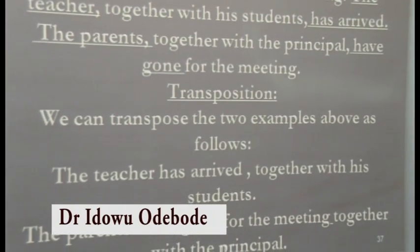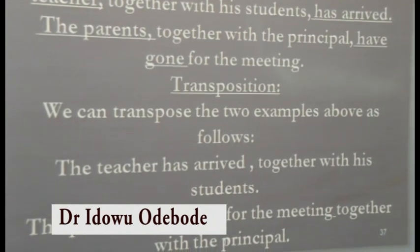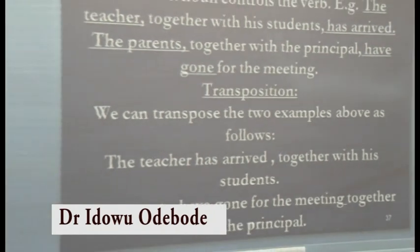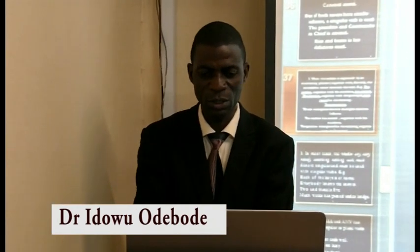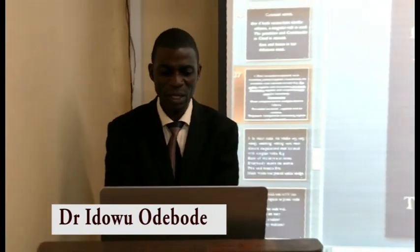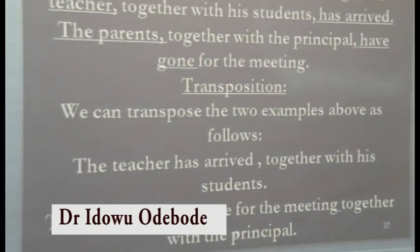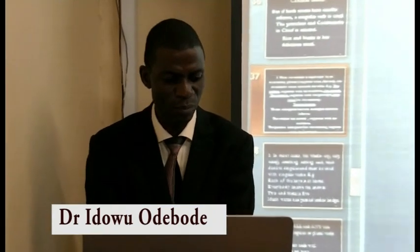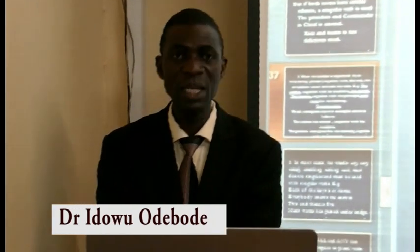By transposition, we verify correctness: 'The teacher has arrived together with his students.' 'The parents have gone for the meeting together with the principal.' Other examples include: 'The child, like his father, wastes his time.' 'The president, with all the cabinet ministers, is attending the meeting.'